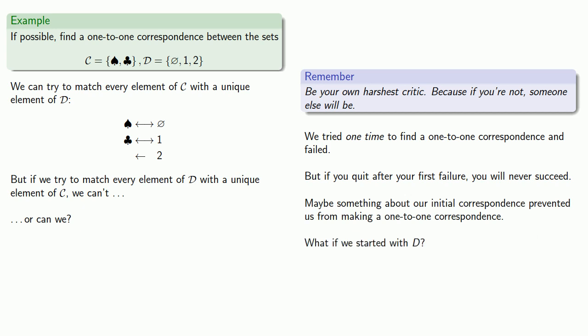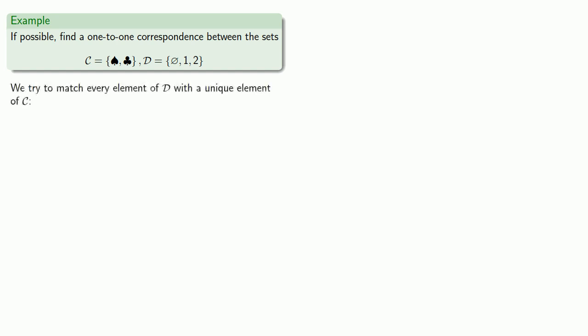What if we started with the set D? Let's try to match every element of D with a unique element of C. We'll list our elements of D and start matching them up with elements of C. How about empty set to spade, one to club, and two to... hmm.